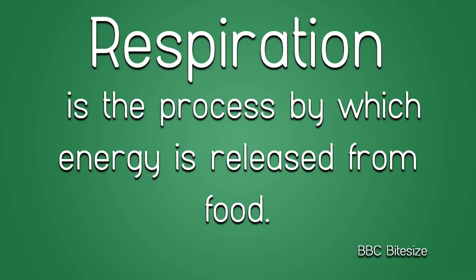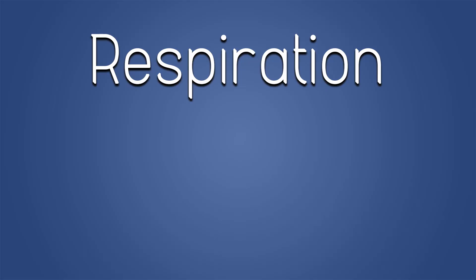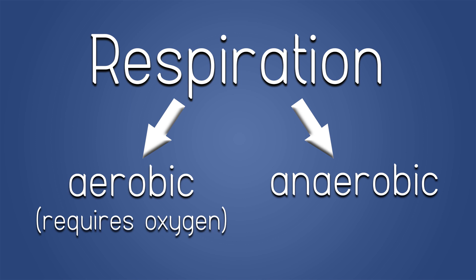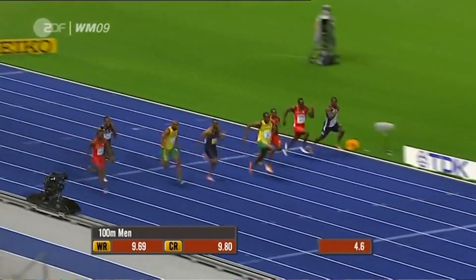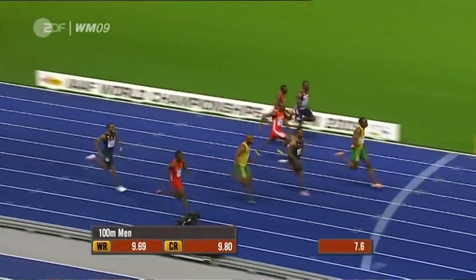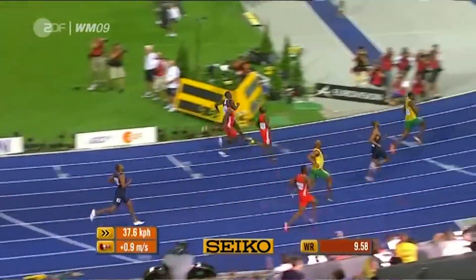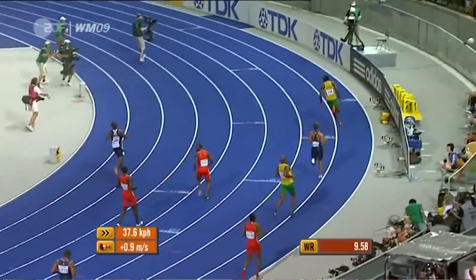In addition to displaying movement, living things undergo the process of Respiration. Respiration, which should not be confused with breathing or gaseous exchange, is a process by which energy is released from food. There are two types of respiration: aerobic and anaerobic. Aerobic means it requires oxygen; anaerobic means it happens without oxygen. Generally, most of our cells undergo aerobic respiration. However, in order to undergo strenuous tasks like running the 100 meters in 9.58 seconds, our cells undergo anaerobic respiration.